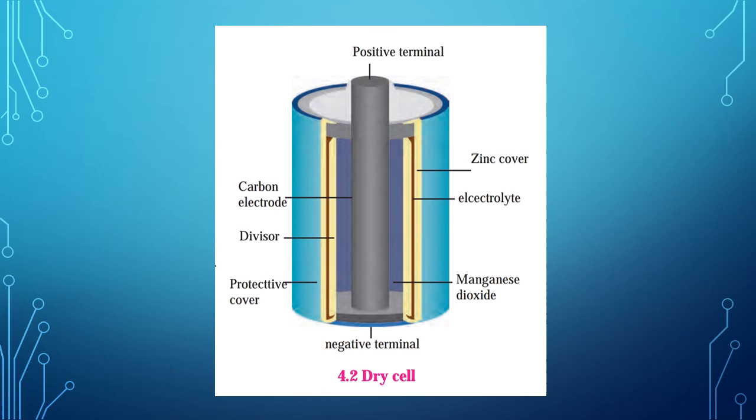A paste of manganese dioxide is filled outside the rod. Because of the chemical reaction of all these chemicals, electrical charge is produced on the two terminals. That is the graphite rod and the zinc layer. And an electric current flows in the circuit. Due to the wet pulp used in the cell, the chemical reaction proceeds very slowly. Hence, a large electric current cannot be obtained from this.